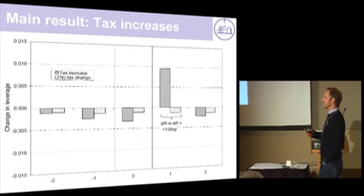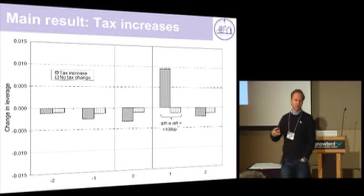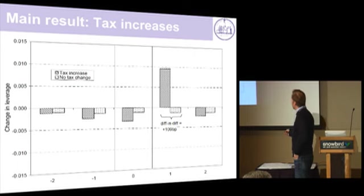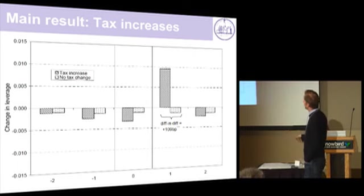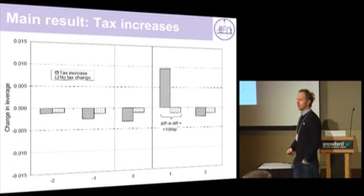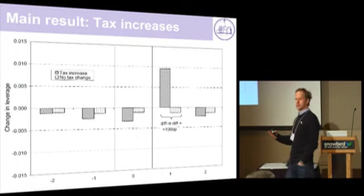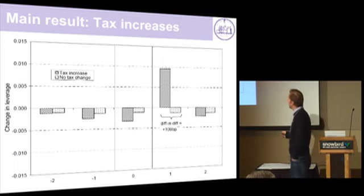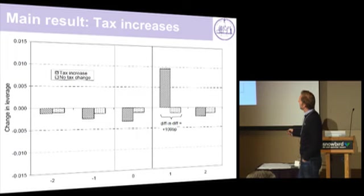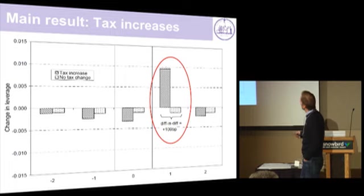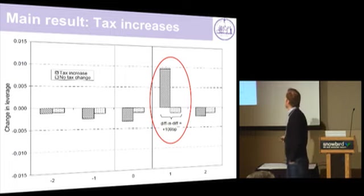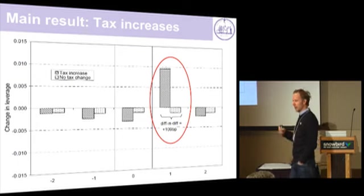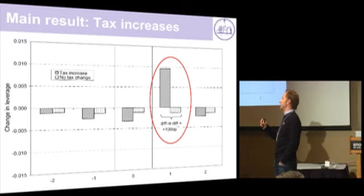This is the typical diff-in-diff graph you may expect from a study like ours, just for illustrating the main purpose — then we do the regression analysis where we can think seriously about controls. Here, event time zero is when the tax event happens, and the y-axis shows change in leverage — within-firm changes, netted out of the firm's industry average leverage. We see two groups: those with a tax increase, and those with no tax change. After the fiscal year of the tax change, there's a strong increase relative to a slight decrease in the control group — a diff-in-diff estimate of around 100 basis points. After the tax increase, firms add 1% of extra debt to their leverage.